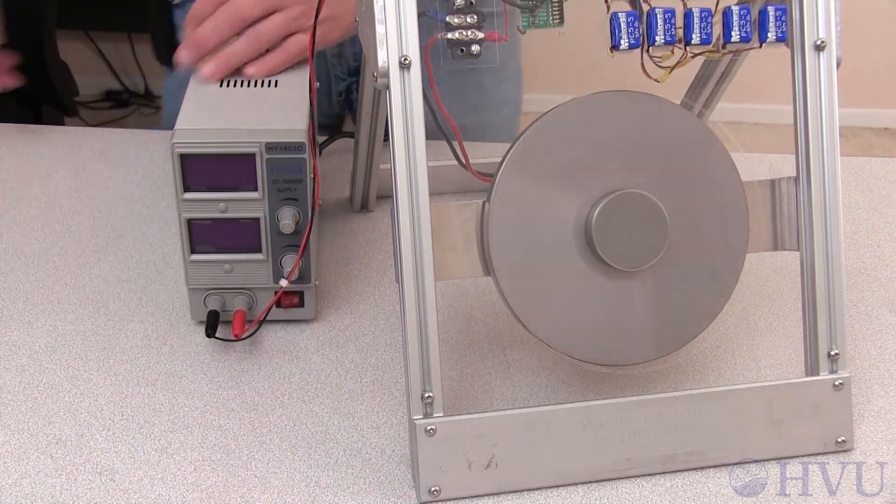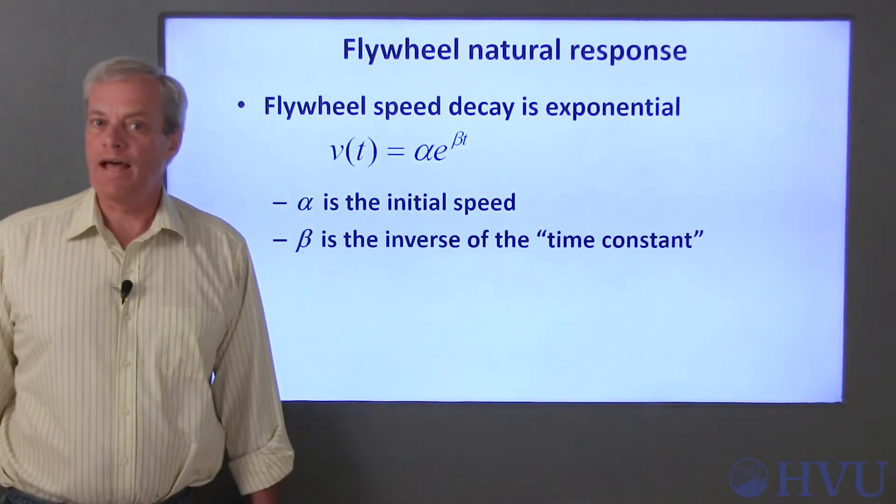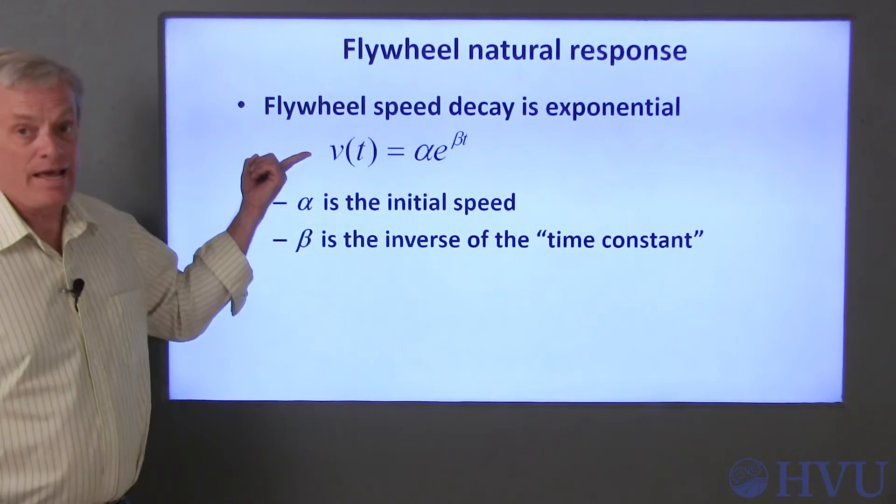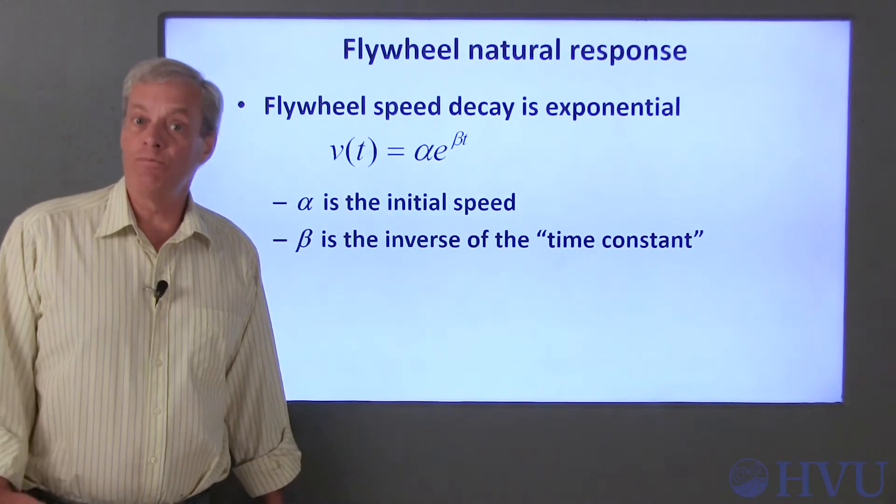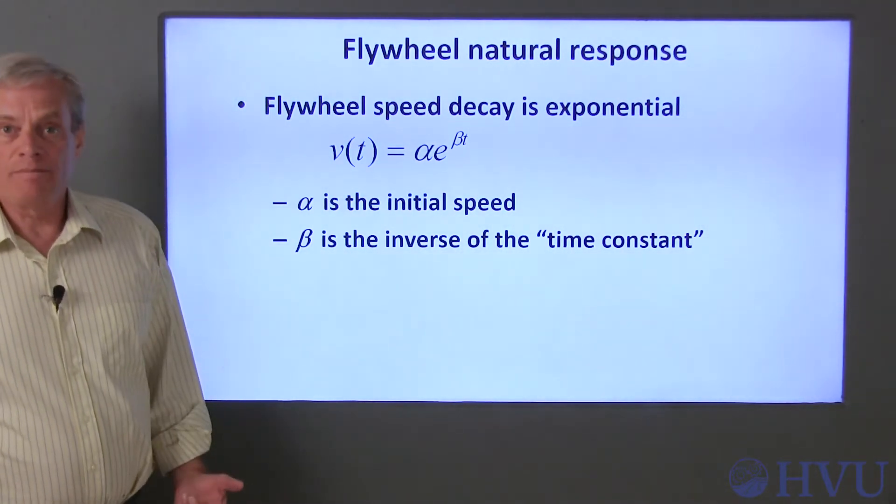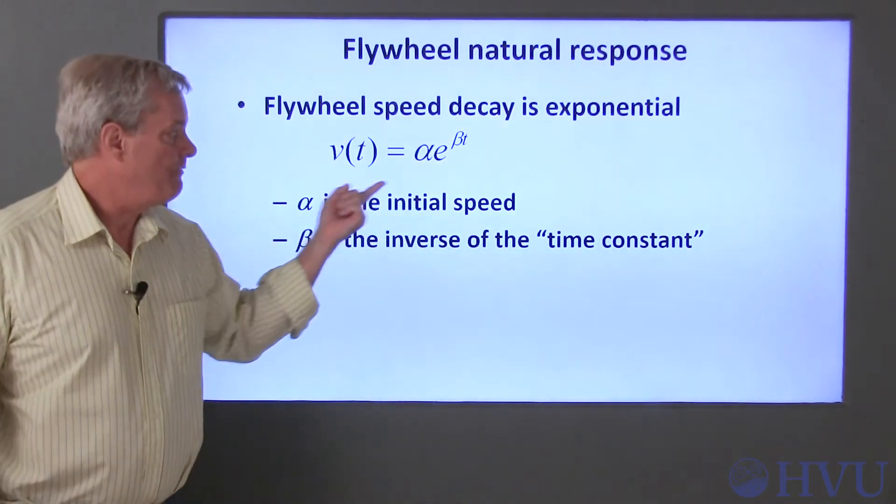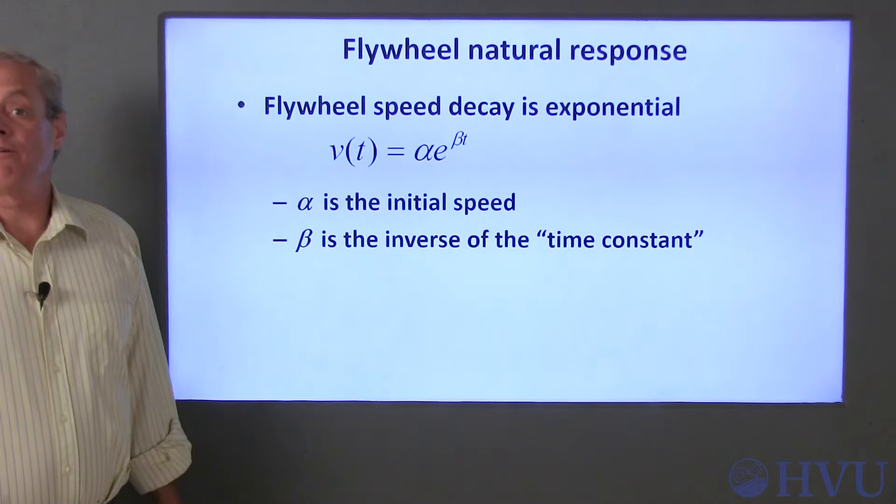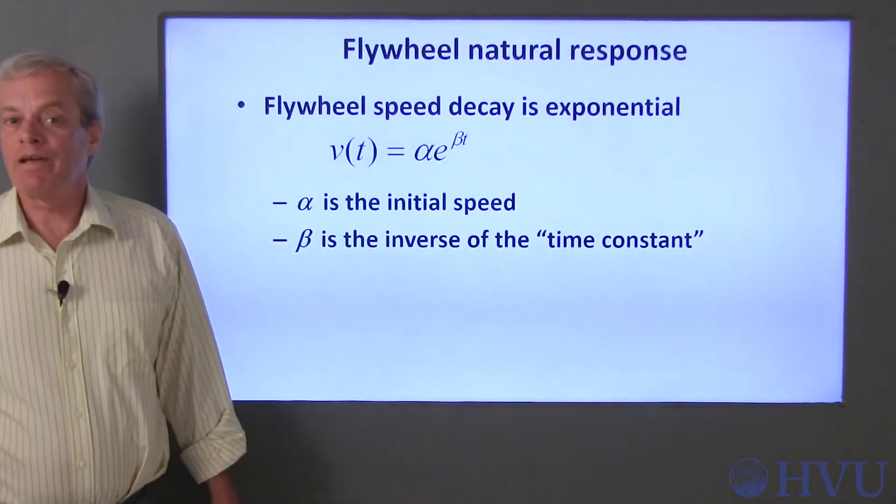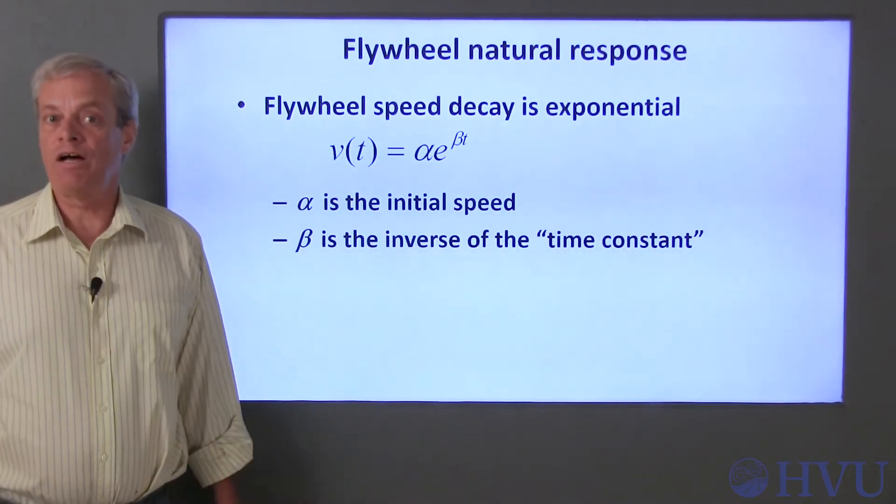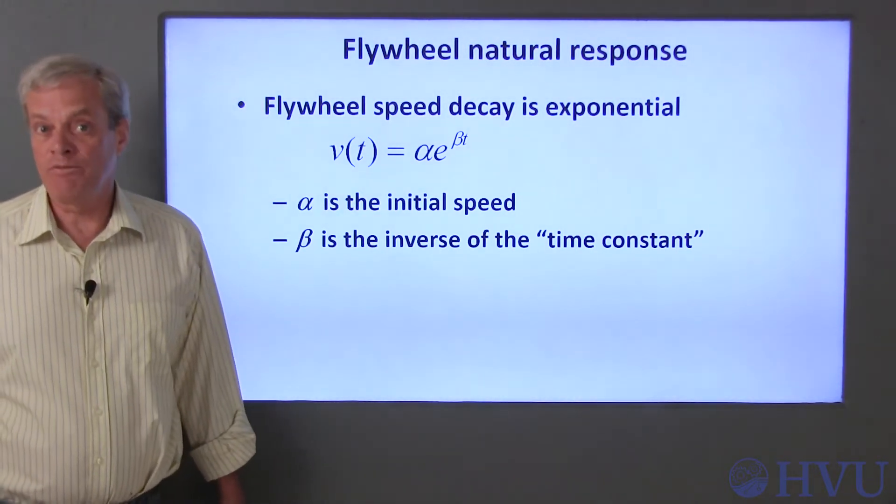A curve fit of that data provides all the important parameters that govern the motor's response. The form of the natural response for this system is an exponential function. V of t is the flywheel velocity as a function of time after the motor is turned off. When time is equal to 0, the e to the beta t term is 1, so that alpha is just the initial speed of the flywheel right after I turn off the motor.